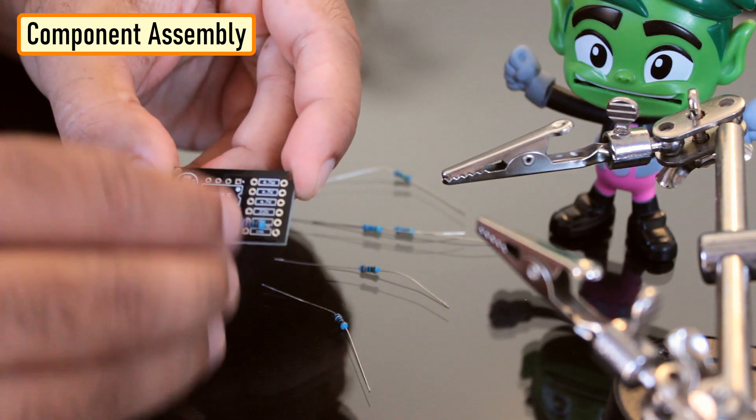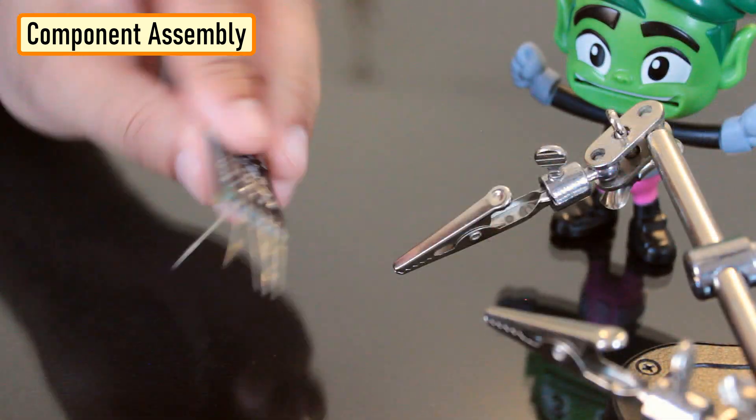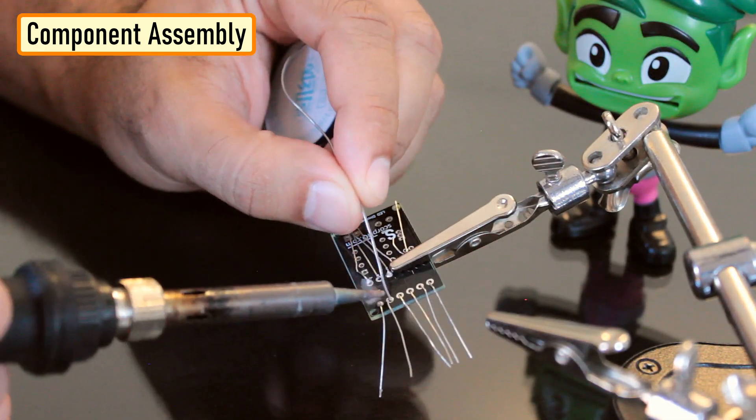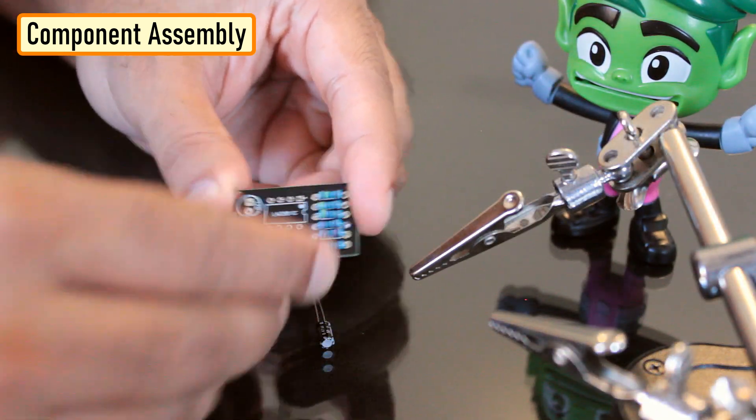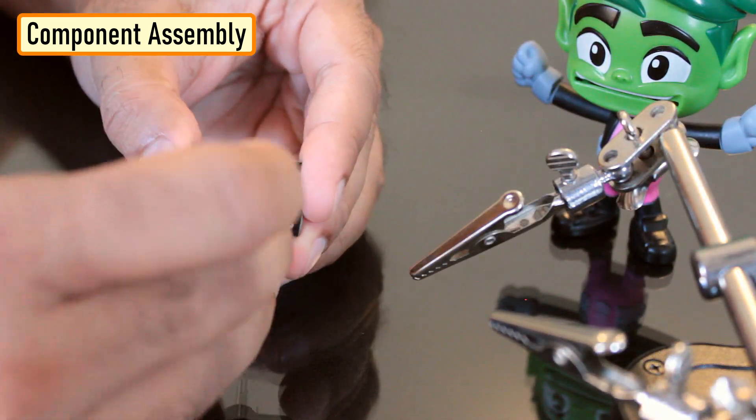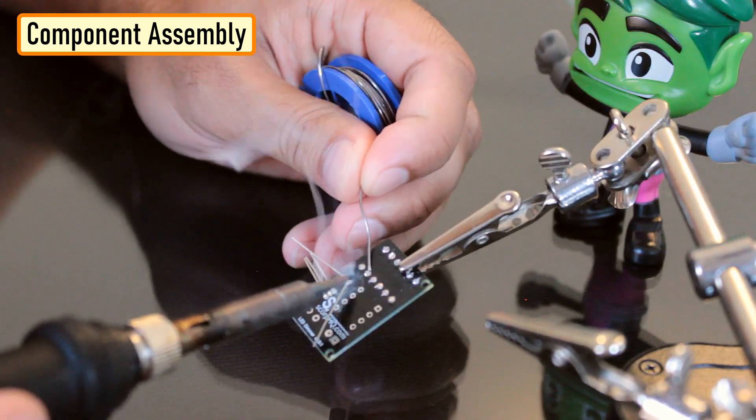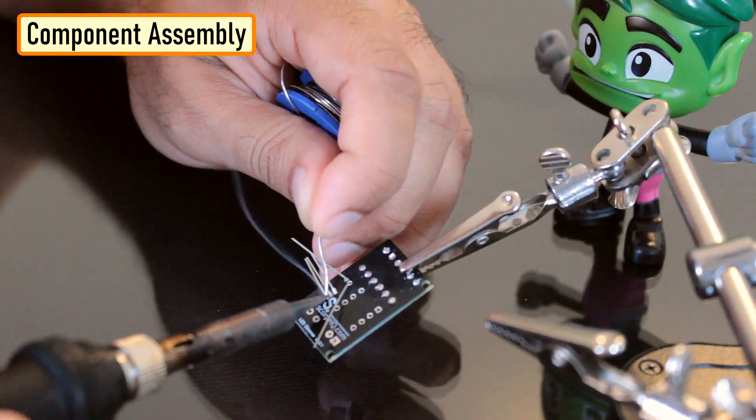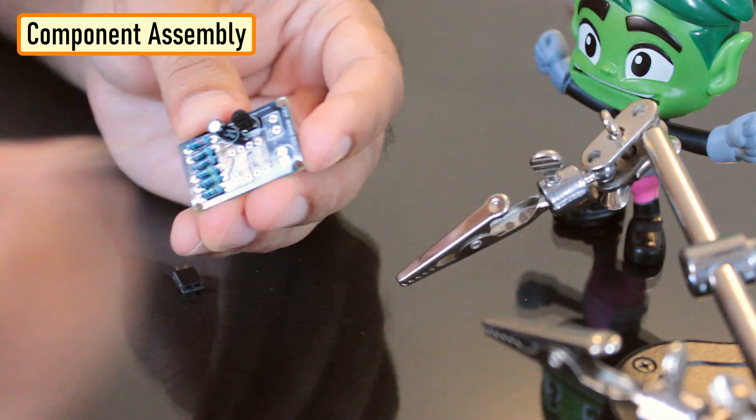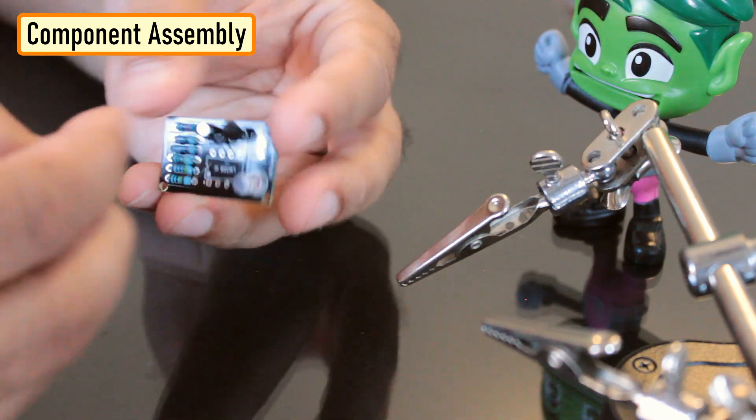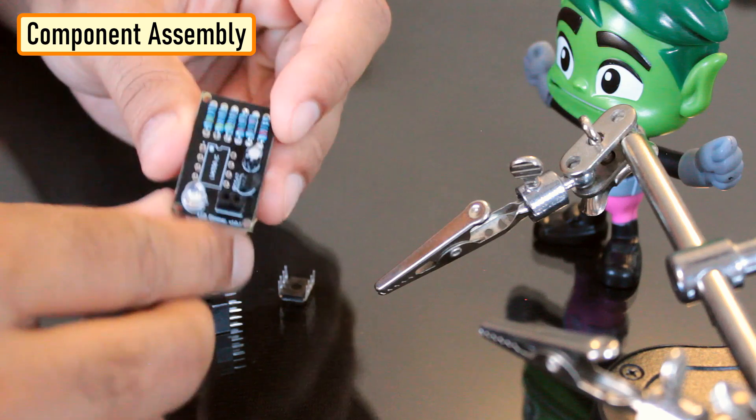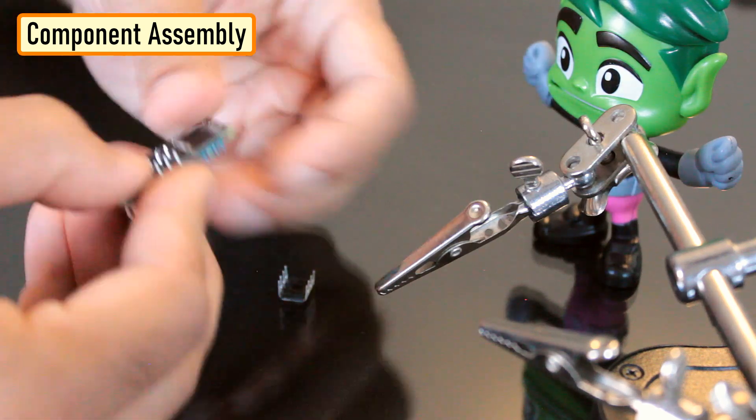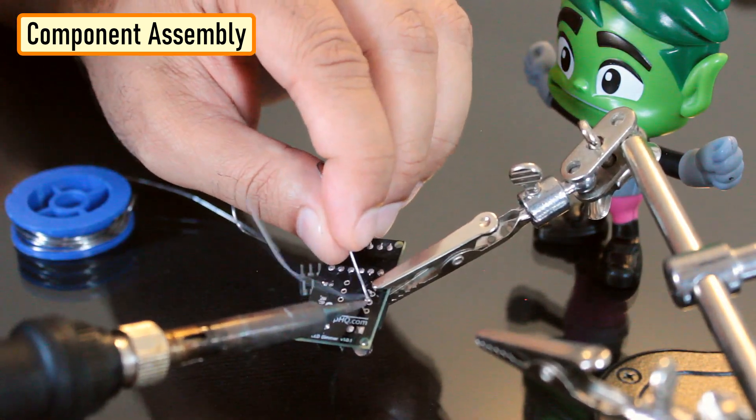Now let's solder all the components to the board. Let's first solder all the resistors to the board. Then let's solder the transistor followed by the capacitor to the board. After that, let's solder the LED and the female pin header. To conclude the setup, let's solder the IC base and then install the IC into it.